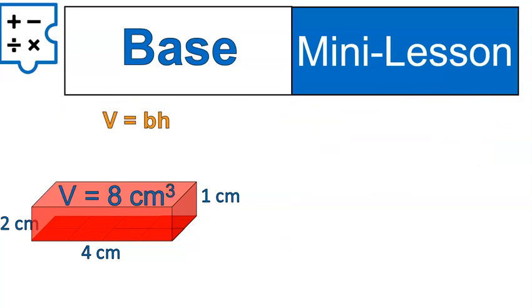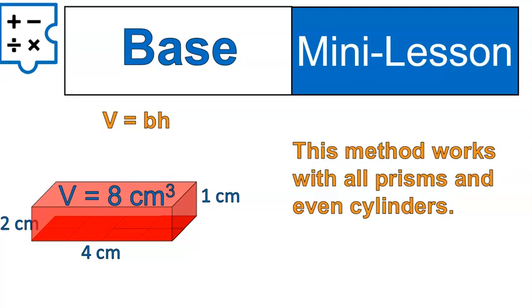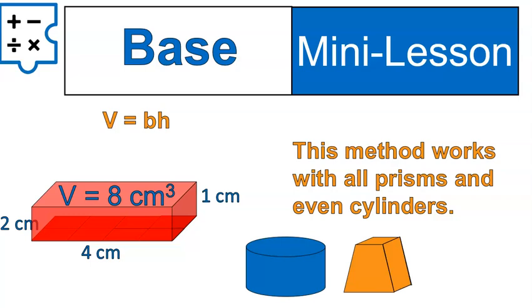Why do we use this formula? Because Volume equals base area times height works with all types of prisms — rectangular prisms, triangular prisms, even cylinders where you find the area of the circle and multiply by the distance between the circles. With a trapezoidal prism, find the area of the trapezoid times the height. With a pentagonal prism, find the area of the pentagon times the height. For rectangular prisms it simplifies to length times width times height, but this is another important way to find the volume.